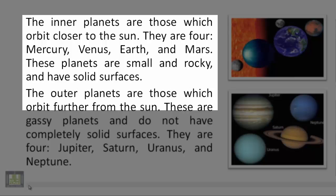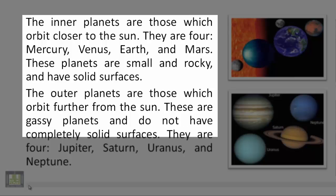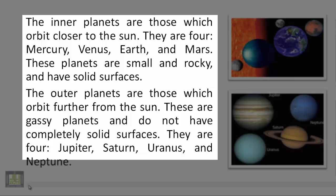The outer planets are those which orbit further from the Sun. These are gassy planets and do not have completely solid surfaces. They are four: Jupiter, Saturn, Uranus, and Neptune.